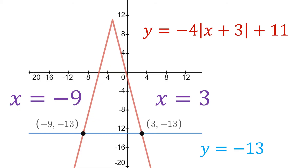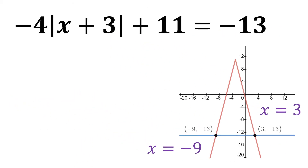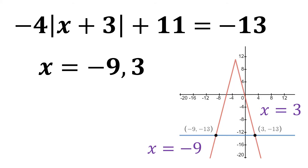So when we go back and look at our original equation, the solutions are x equals negative 9 and 3. Those are just the x-coordinates of all the points of intersection when I take each side of the equation and graph them.